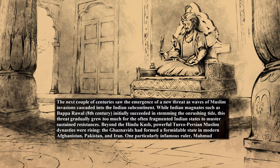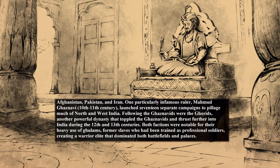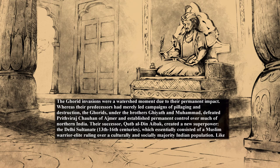Beyond the Hindu Kush, powerful Turco-Persian Muslim dynasties were rising. The Ghaznavids had formed a formidable state in modern Afghanistan, Pakistan, and Iran. One particularly infamous ruler, Mahmud Ghaznavi, launched 17 separate campaigns to pillage much of north and west India. Following the Ghaznavids were the Ghurids, another powerful dynasty that toppled the Ghaznavids and thrust further into India during the 12th and 13th centuries. Both factions were notable for the heavy use of ghulams — former slaves trained as professional soldiers — creating a warrior elite that dominated both battlefields and palaces. The Ghurid invasions were a watershed moment: the brothers Ghiyath and Muhammad defeated Prithviraj Chahamana of Ajmer and established permanent control over much of northern India.